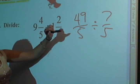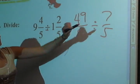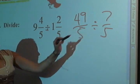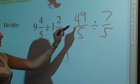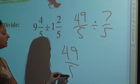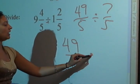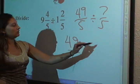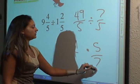Now since we have a division sign, we know that we need to flip this fraction and make this a multiplication sign. This fraction stays the same. So 49 over 5 times, that's our multiplication sign, 5 over 7.